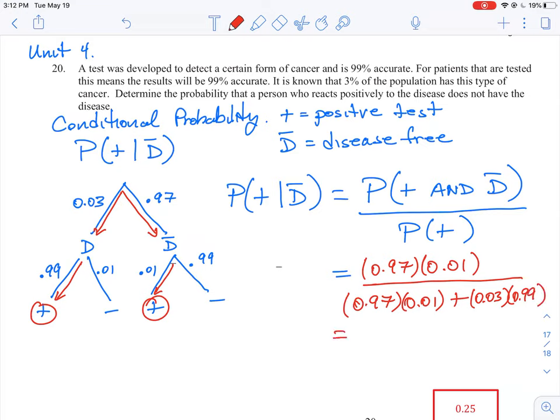And when we work out this answer, we are looking here for essentially a percentage. So 0.0097 divided by 0.0394 approximately, this will approximately give us 0.25, which is what our key is telling us.